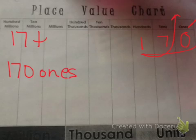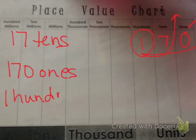I was originally given 17 tens. And then now let's name the value of each number individually. I have 1 hundred and 7 tens.